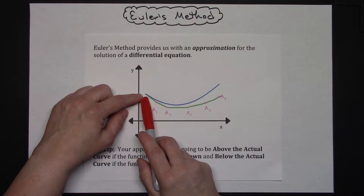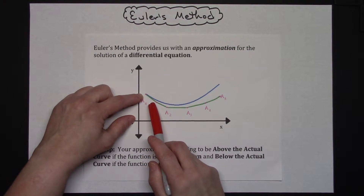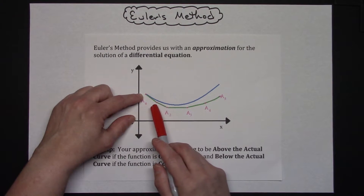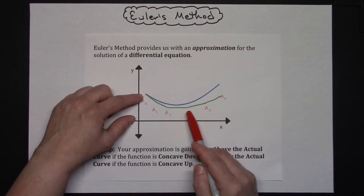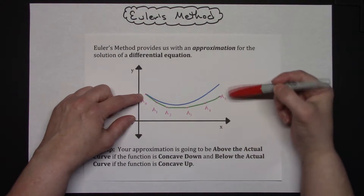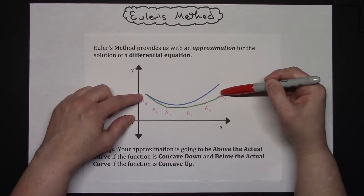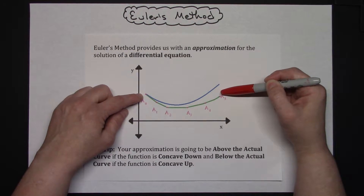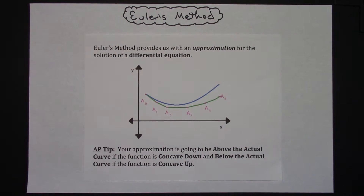You can tell right here, like this first one, I'm pretty close to that actual solution. But every time I generate another point, my approximation gets farther and farther away from the actual solution. So your approximation will remain better closer to your original point.